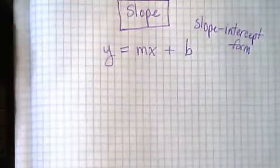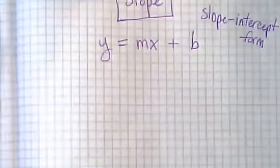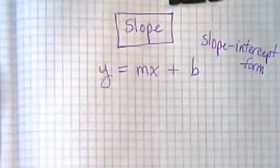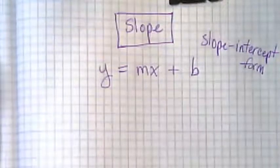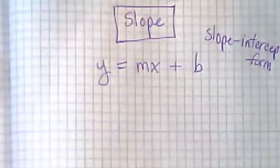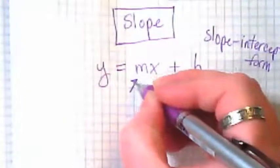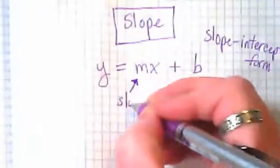And I want to show you in the equation where the slope is and where the intercept is. And again, you've already started to use these as you've been working on landing your airplanes. This place where the m is, that's the slope part.